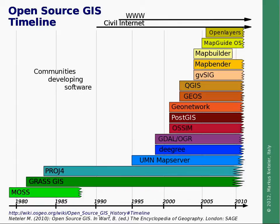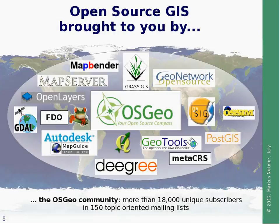In 2005 and 2006, there was the discussion of how to get this under a common hood, and the idea was to found the OSGEO, the Open Source Geospatial Foundation. You can see from the logos that there are well-known projects, among them also industrial players. As of today, there are more than 18,000 unique subscribers in more than 150 topic-oriented mailing lists. It's a very intensive exchange of ideas.